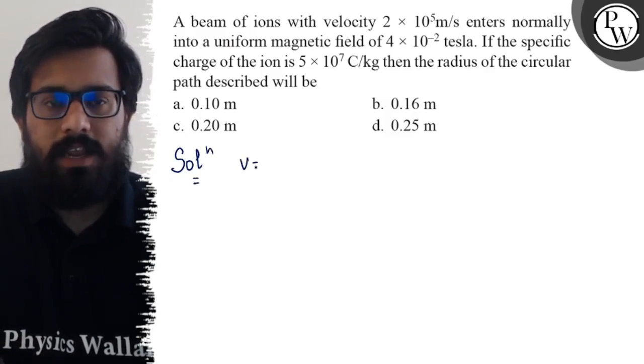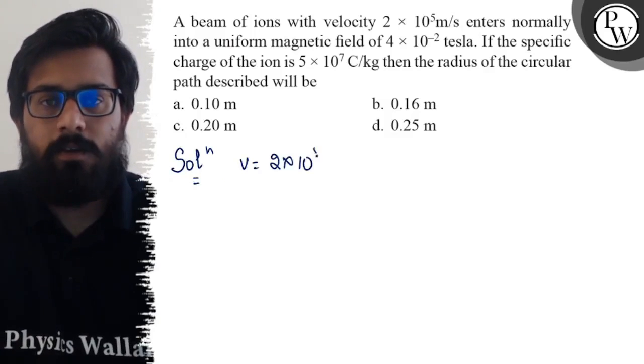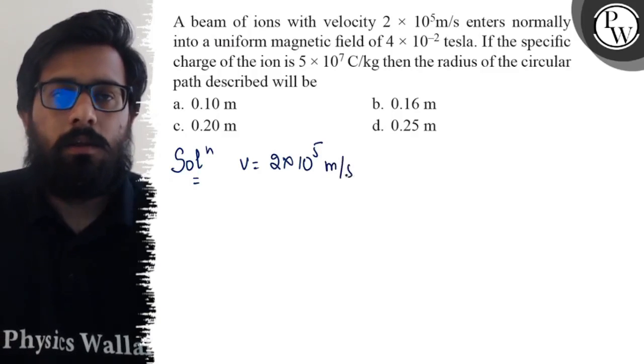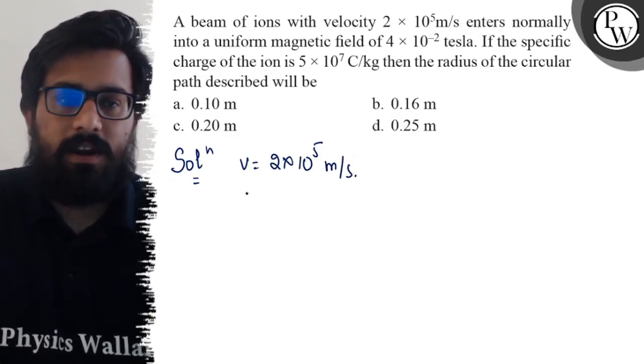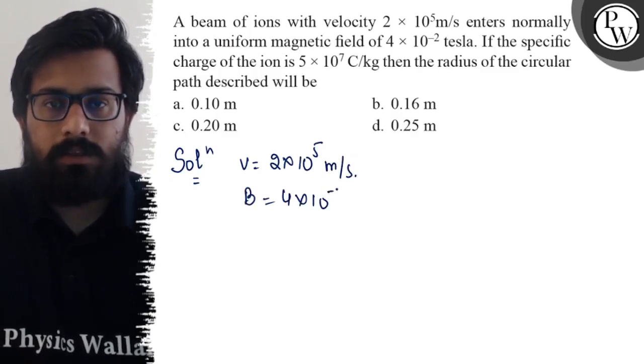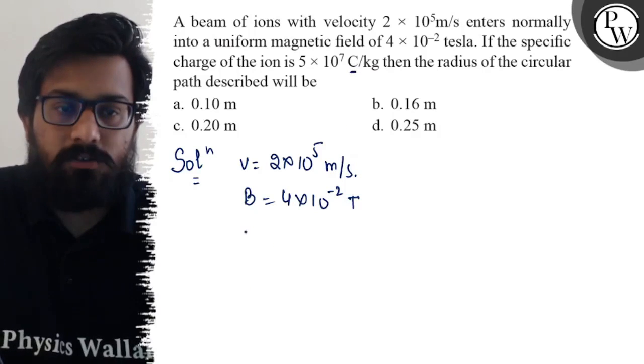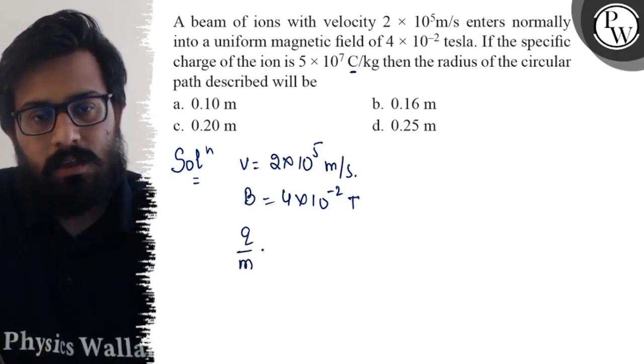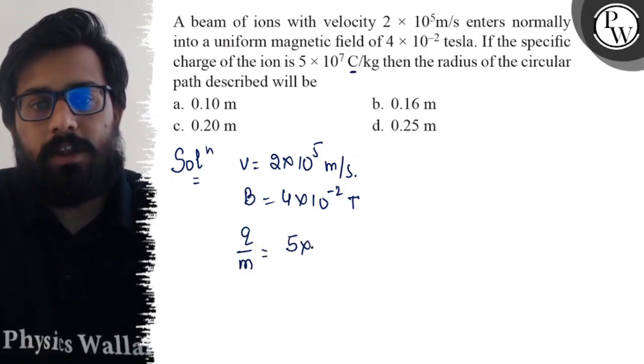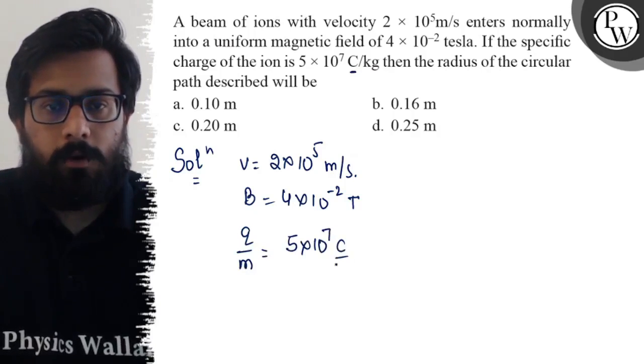So here in this question, we have the velocity as 2 × 10⁵ meter per second. We have the value of magnetic field as 4 × 10⁻² tesla. From here I know this is coulomb per kg, which is actually charge per unit mass, which is equal to 5 × 10⁷ coulomb per kg.